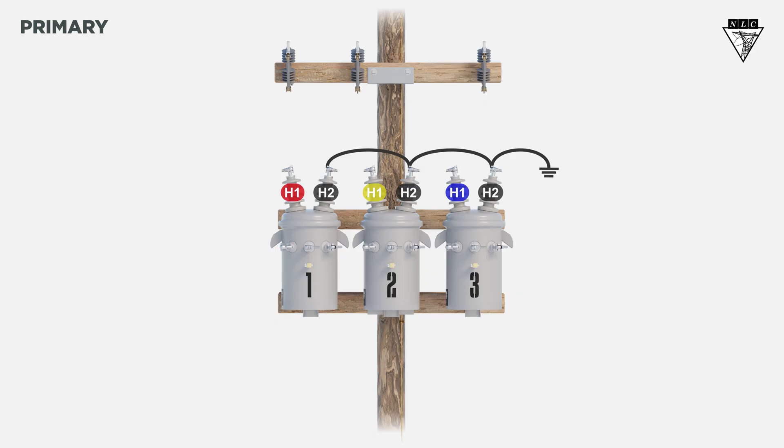Next, connect the H1 bushings of each transformer to a phase, starting with the A phase, then the B phase, and ending with the C phase.